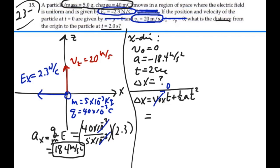So it's one-half times -18.4 times 2 seconds squared, which is going to be -36.8 meters.